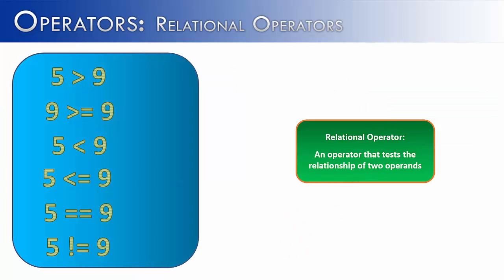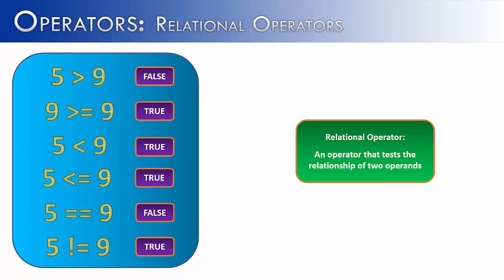So in this slide I've shown you some relational operators in use. And like I said, they're always going to perform a test. And so they're going to be testing for true or false. We can see that 5 is not greater than 9, therefore it would return false. 9 is greater than or equal to 9, so that would return true.